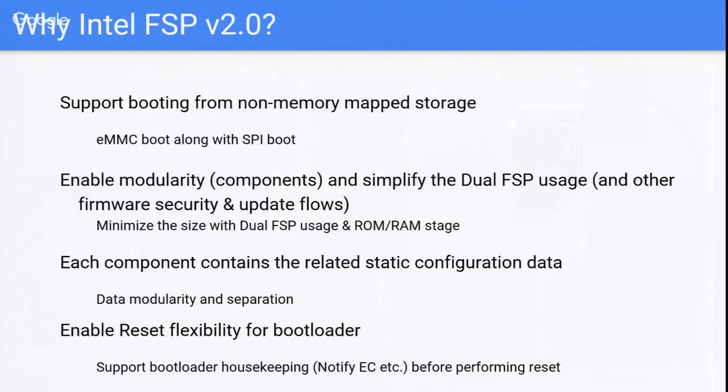A lot of people at Intel took the existing FSP model, locked down what we thought would be consistent architectural APIs, and called that FSP 1.0. We then worked with the upstreams—Coreboot and EDK2—to have wrapper code so there was only one interface. Through product development there were enhancements called FSP 1.1.